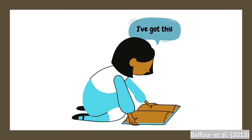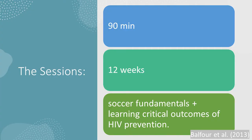Balfour and colleagues stated that self-efficacy is a crucial predictor of risk behaviour. WizKids United aims to foster self-efficacy and encourage youths to make healthy choices and build respect for HIV prevention. Good self-efficacy also helps to withstand peer pressure to have sex before they feel ready and to insist on using condoms if their partner dismisses the need. It also helps them to make the decision about accessing counselling and sexual healthcare services. Therefore, the programme consisted of eight sessions, each 90 minutes long, with the aim to connect soccer fundamentals to learning critical outcomes of HIV prevention.